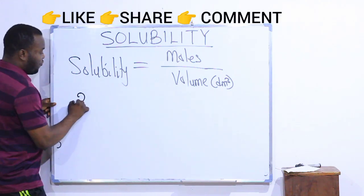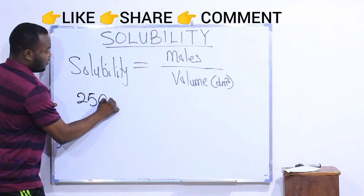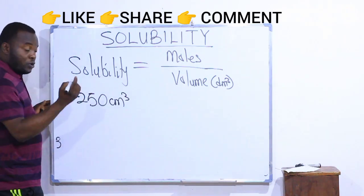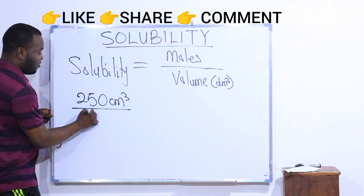So, converting 250 cm³ to dm³, all we need to do is to divide by 1000.